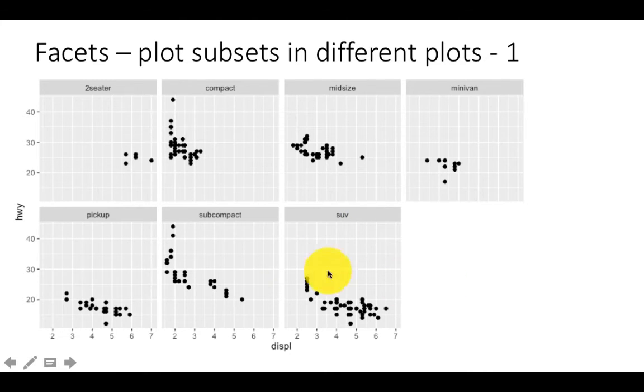We may want a scatter plot of displacement versus highway mileage, but show me a separate scatter plot for cars of each class. Earlier we saw a scatter plot of the entire dataset, but now we want to break it up into separate scatter plots for cars of different classes.